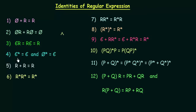The fourth identity says ε* = ε. If you have ε and perform the closure of that, then what you get is ε itself. Also important: the closure of φ is not φ but it is ε. So if you have φ and perform the closure of it, you get the ε symbol.